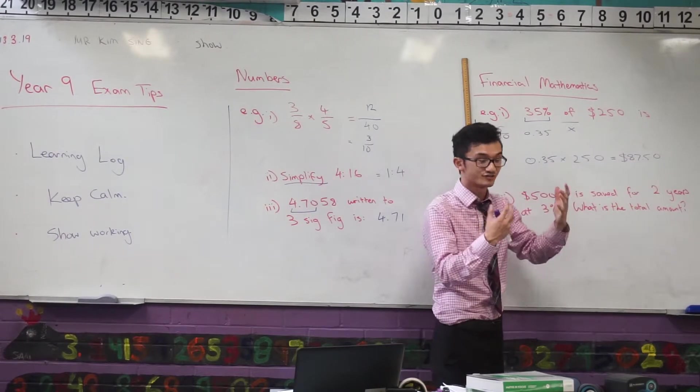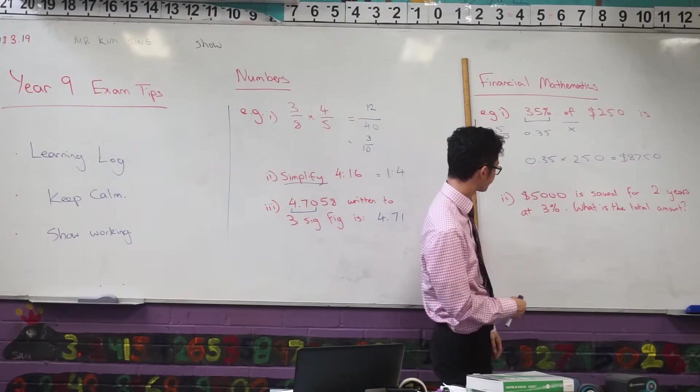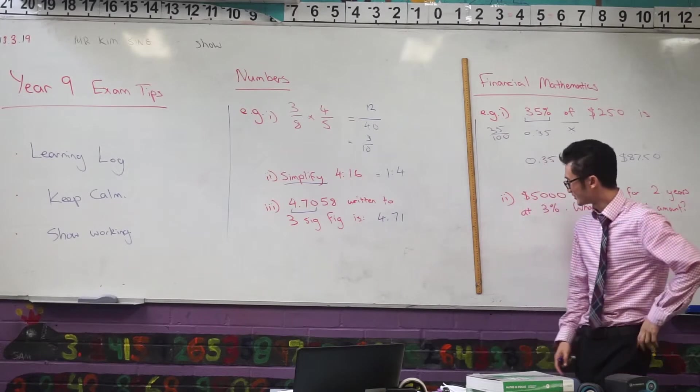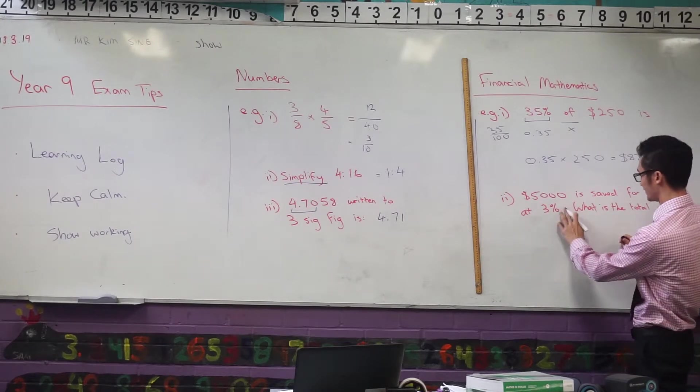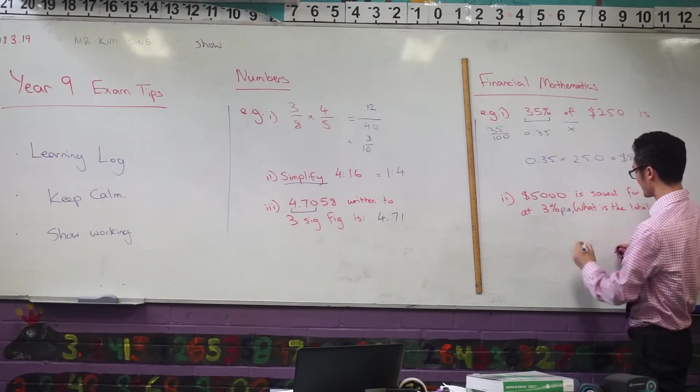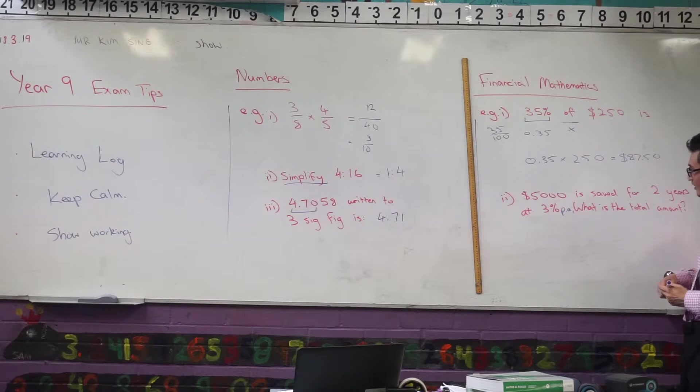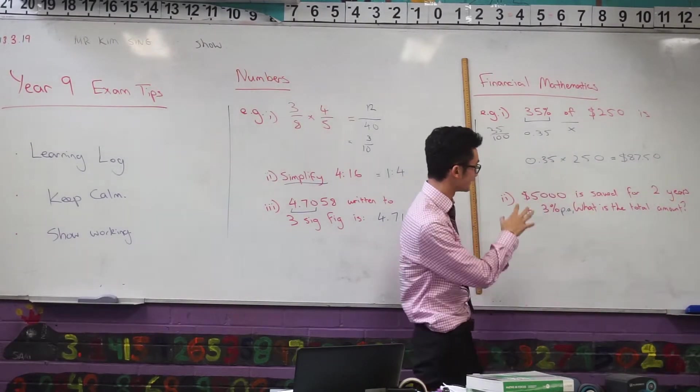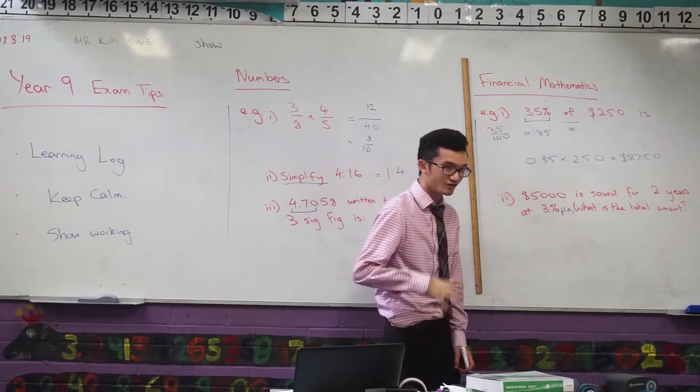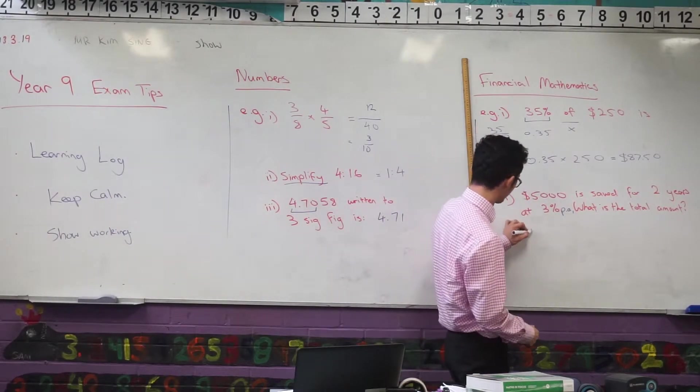All right, awesome. Last one here. We've got $5000 saved for 2 years at 3%, and we should say how often, per annum. What is the total amount? So a few things going on here. We know that when we're looking at our simple interest, the formula to calculate that looks like this.